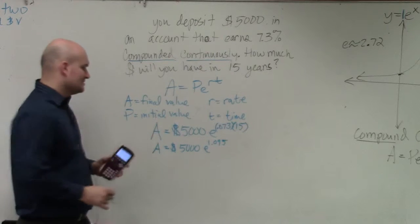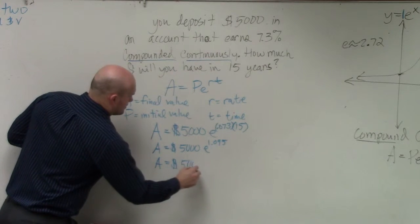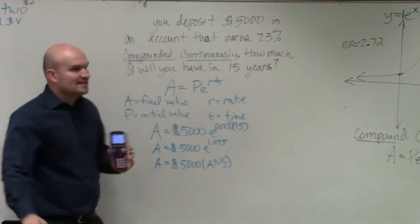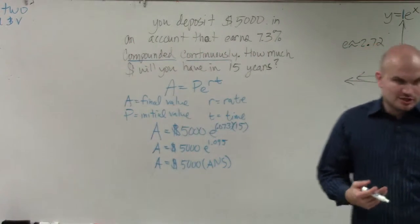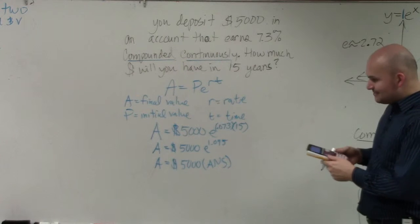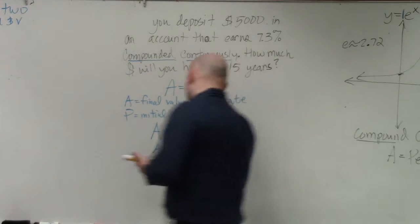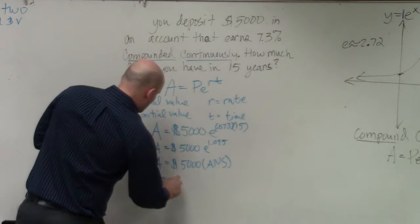Now, you don't want to approximate this, so I'm going to leave this exact answer here. And you could write it out, or most calculators that have the e also have the answer button in your function in your calculator. So then I'm just going to do 5,000 times my last answer, which gives me 14,945.